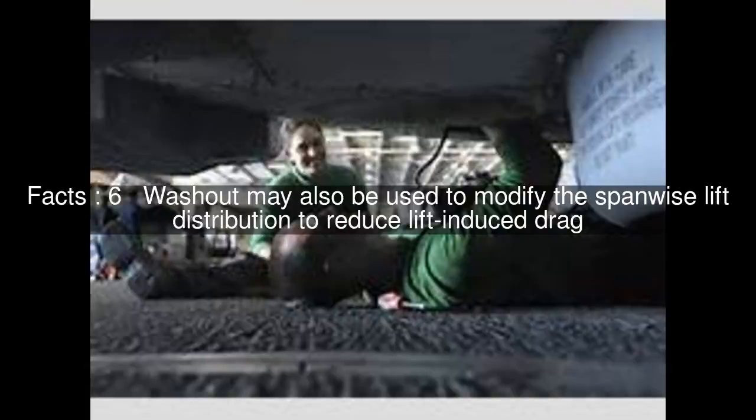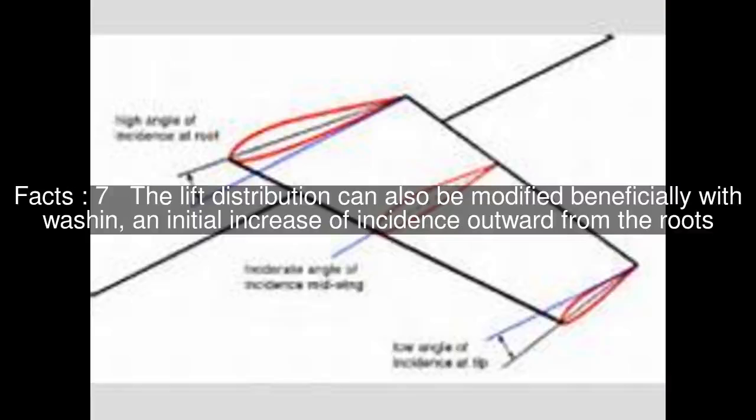Washout may also be used to modify the spanwise lift distribution to reduce lift-induced drag. The lift distribution can also be modified beneficially with wash-in, an initial increase of incidence outward from the roots.